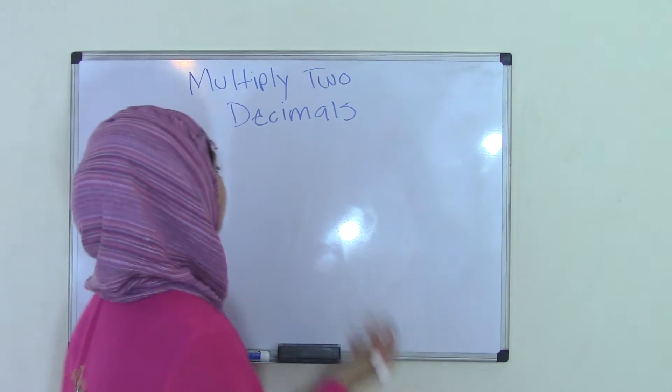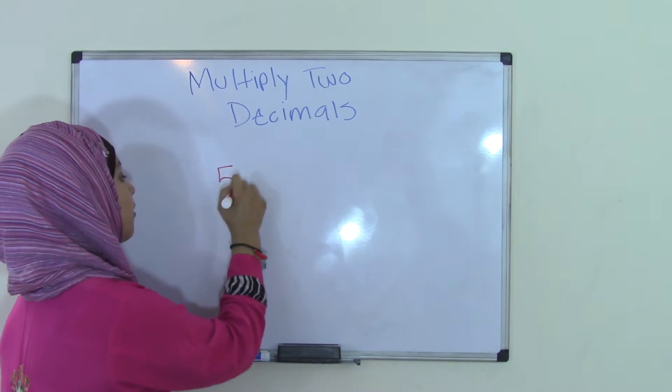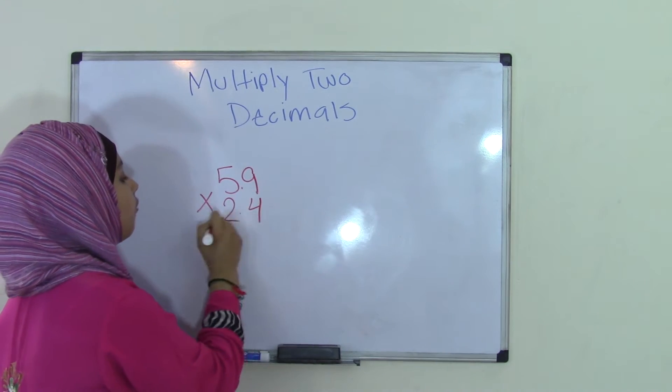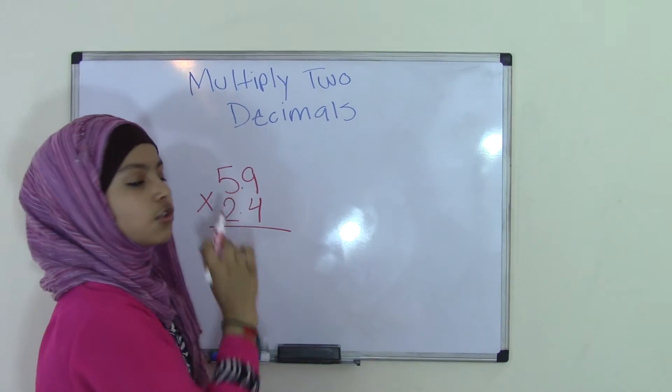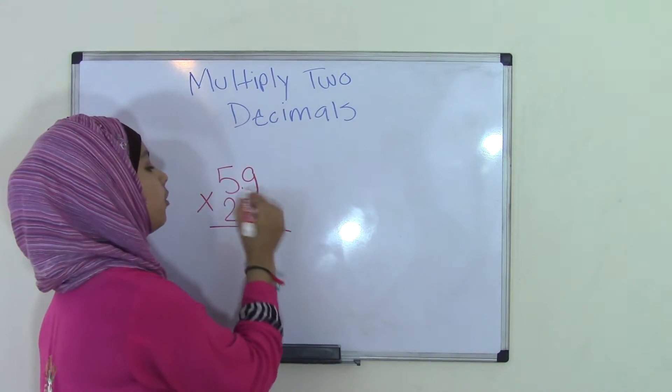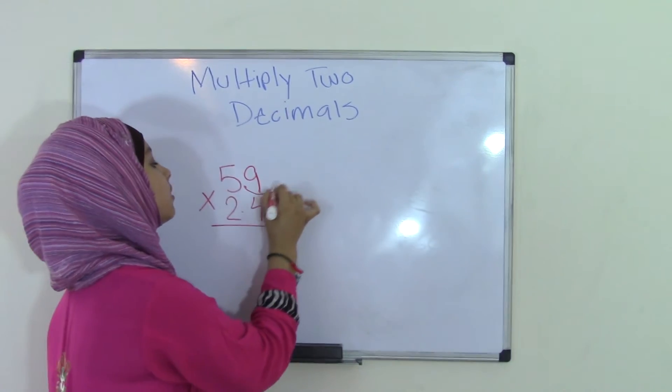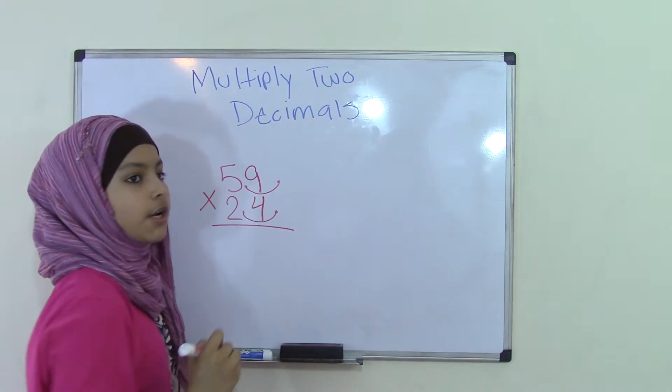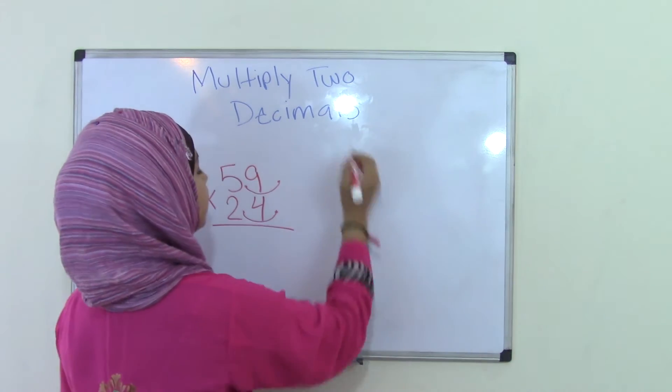So let's say that we have a problem such as 5.9 times 2.4. Remember that these decimal points do not matter at this point. All you have to do is take these decimal points and just remove them. So that means we now have 59 times 24. So what we're going to do is we're going to write this aside.